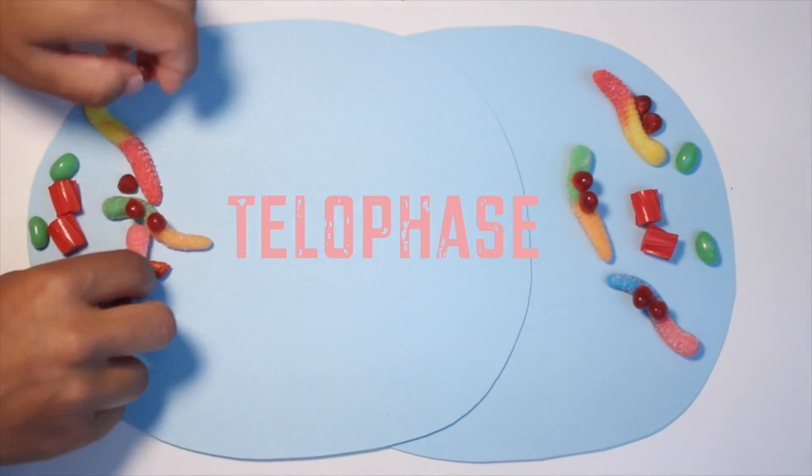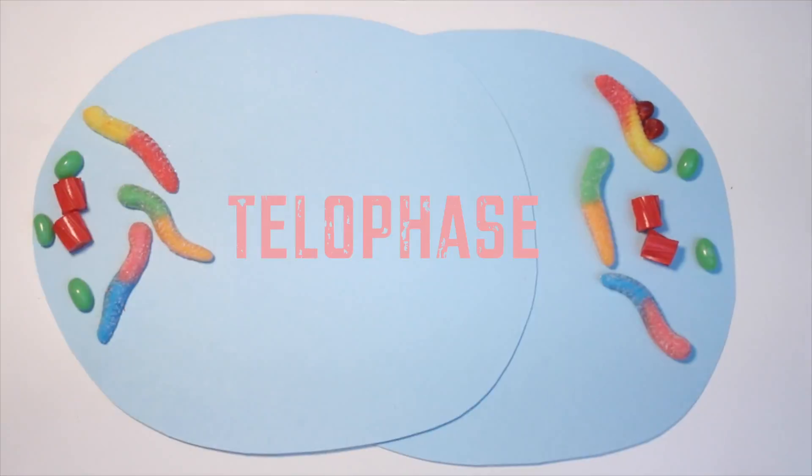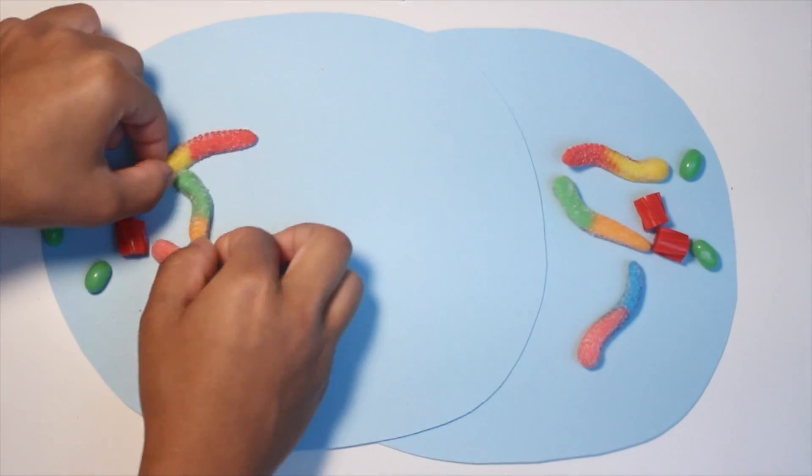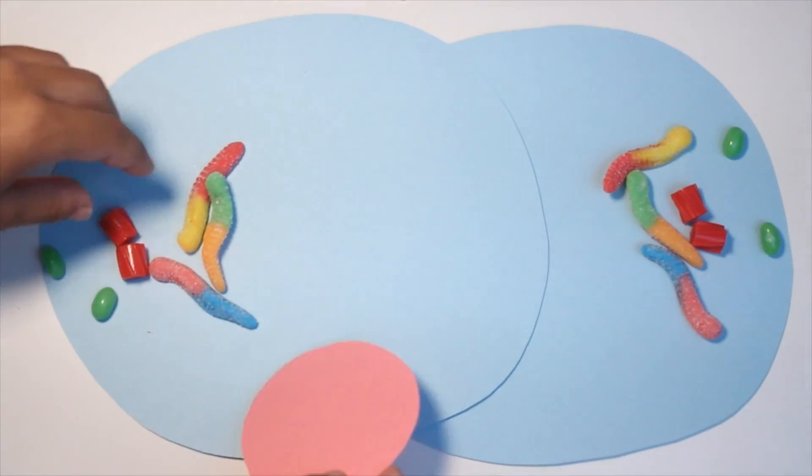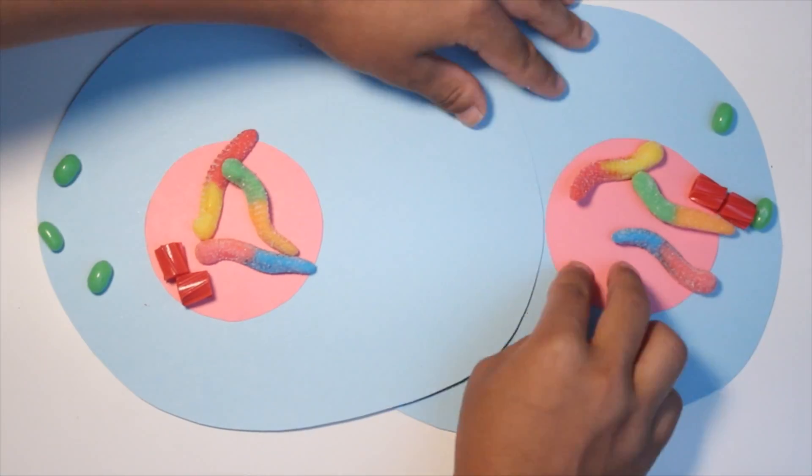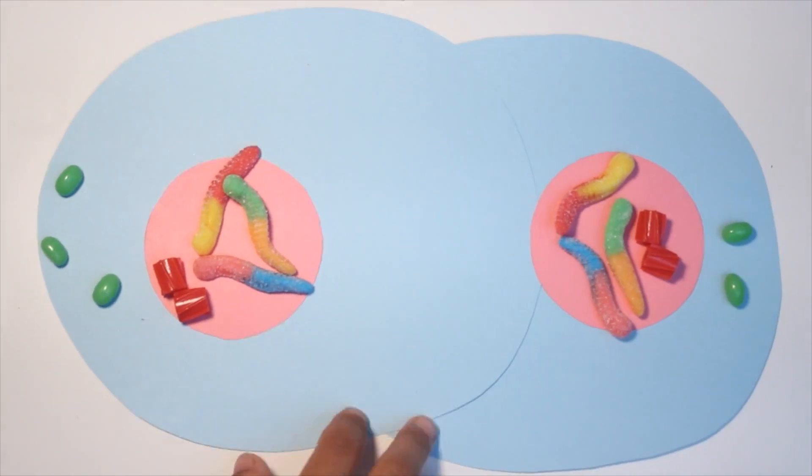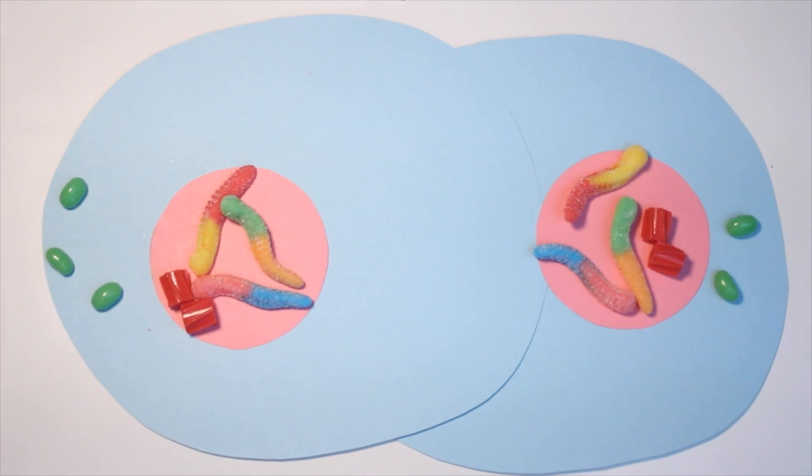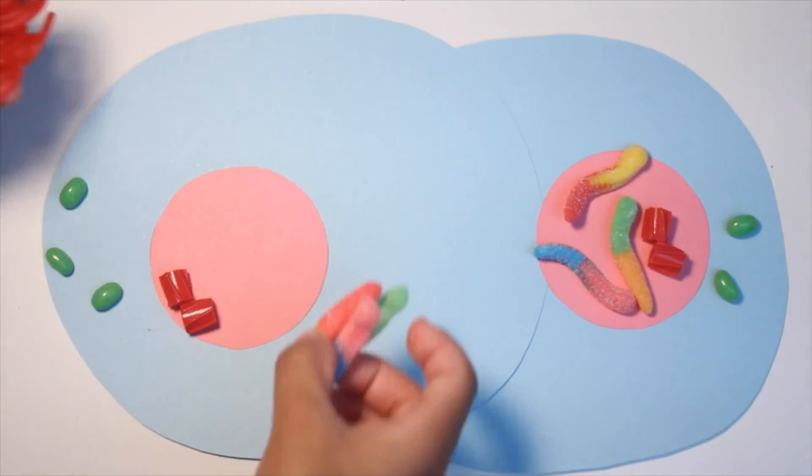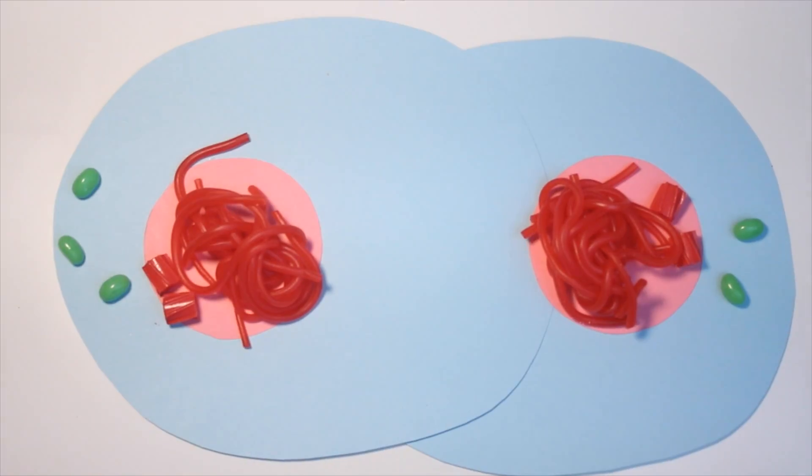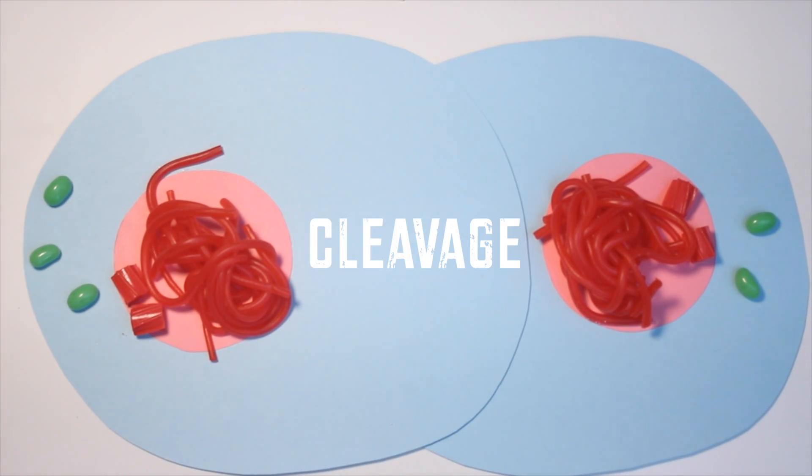Next is telophase, and during telophase, parts of the cell start to be reconstructed. This includes the nuclear membrane and the nucleoli inside. Then chromatids relax back into their tangled chromatin states. When the cell looks like it has this crease in the middle of it, it's called cleavage.